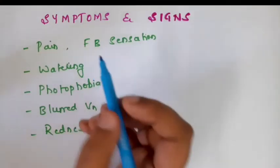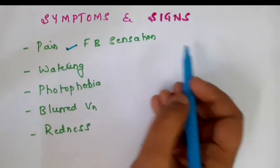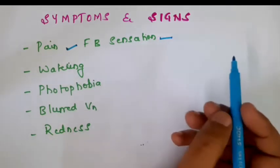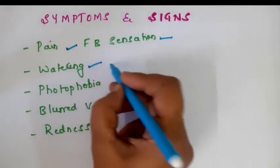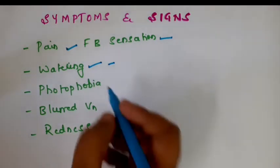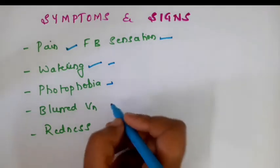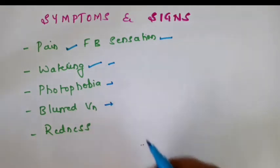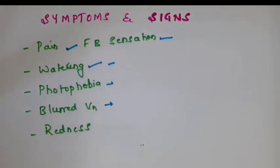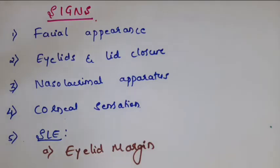What are the symptoms of corneal ulcer? Any breach in the cornea will lead to intense pain. There will be foreign body sensation and reflex watering of the eyes. Photophobia - that is inability to open the eyes in ambient light - may be present. There can be blurred vision or decreased vision depending upon the extent and location of the ulcer, and there is redness. These are the complaints with which a corneal ulcer patient will present.